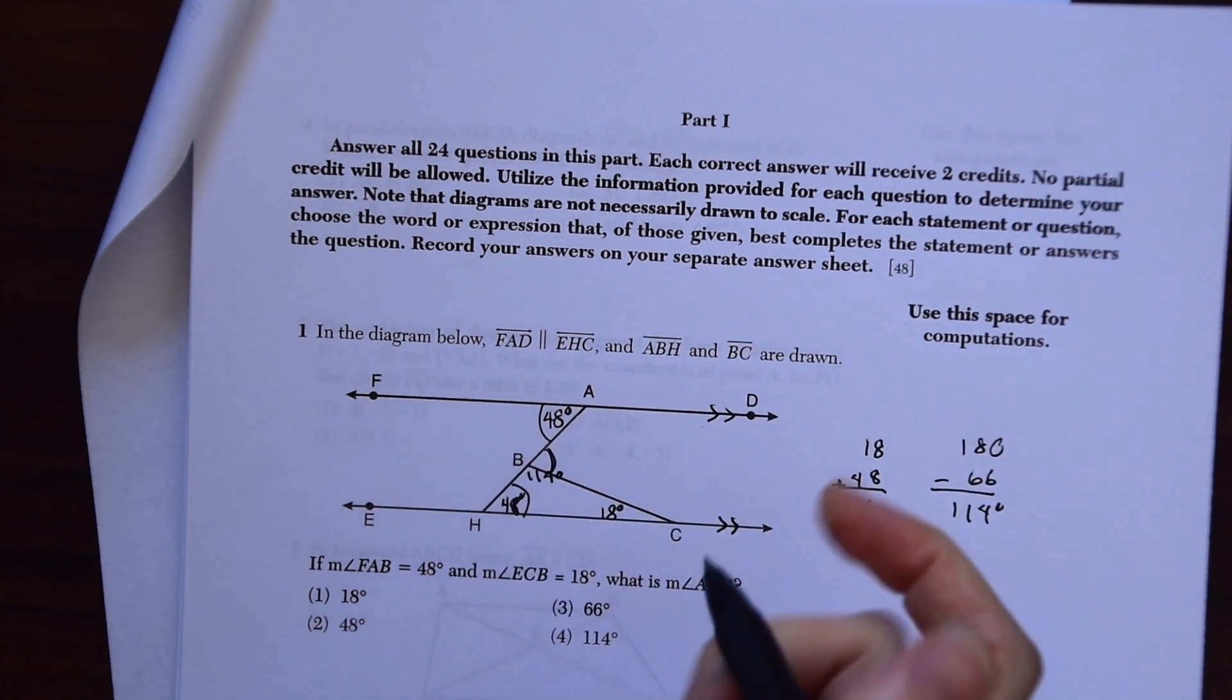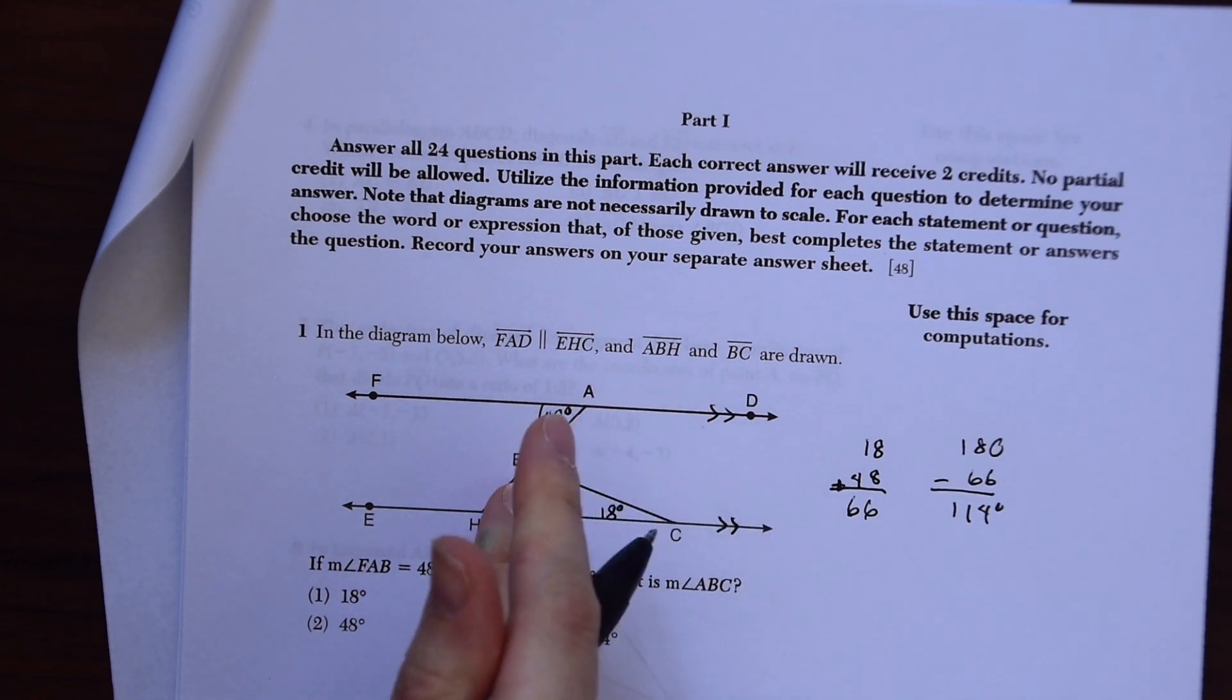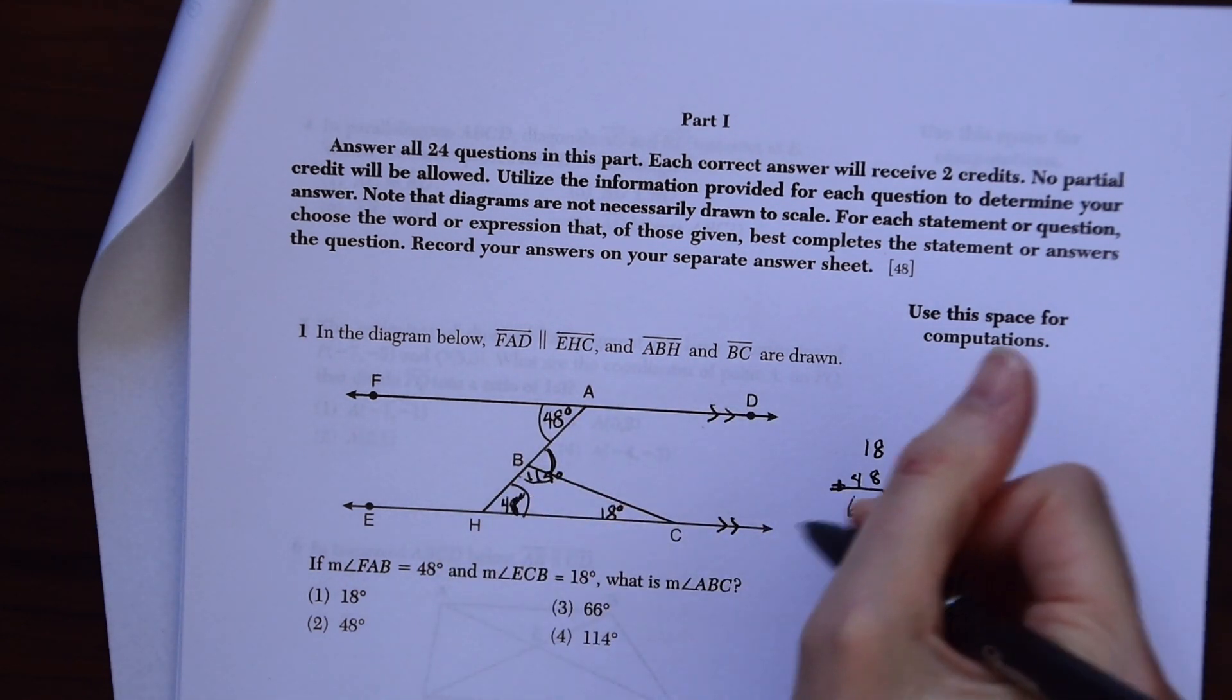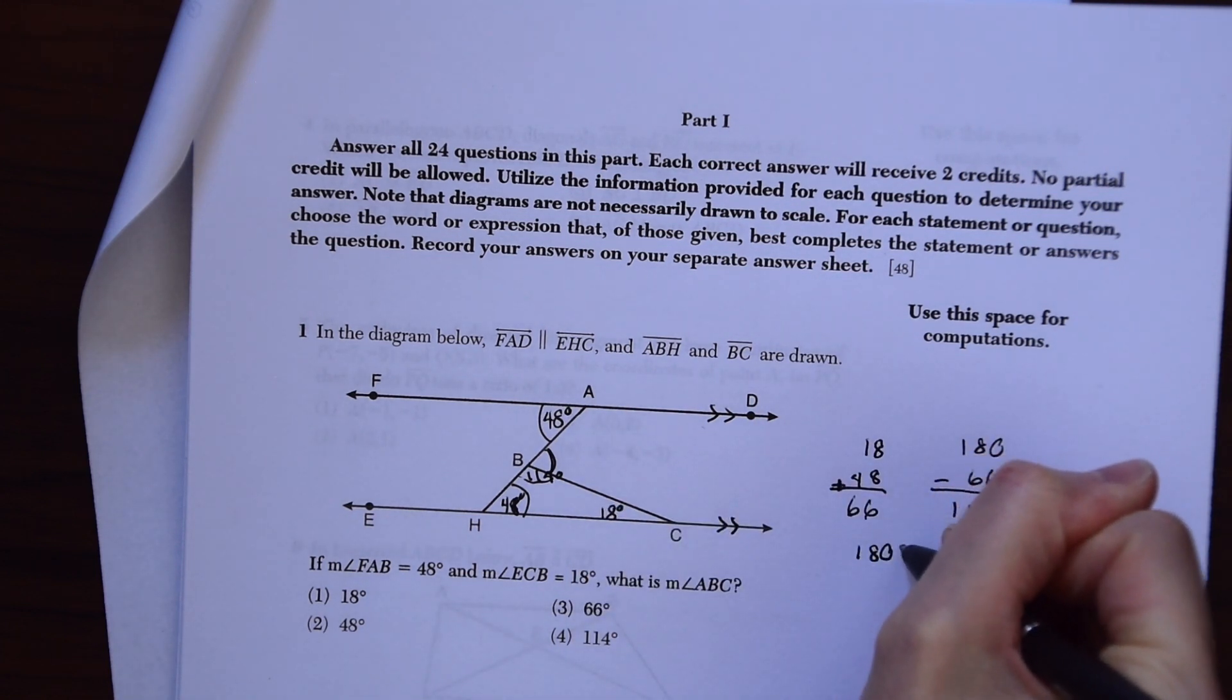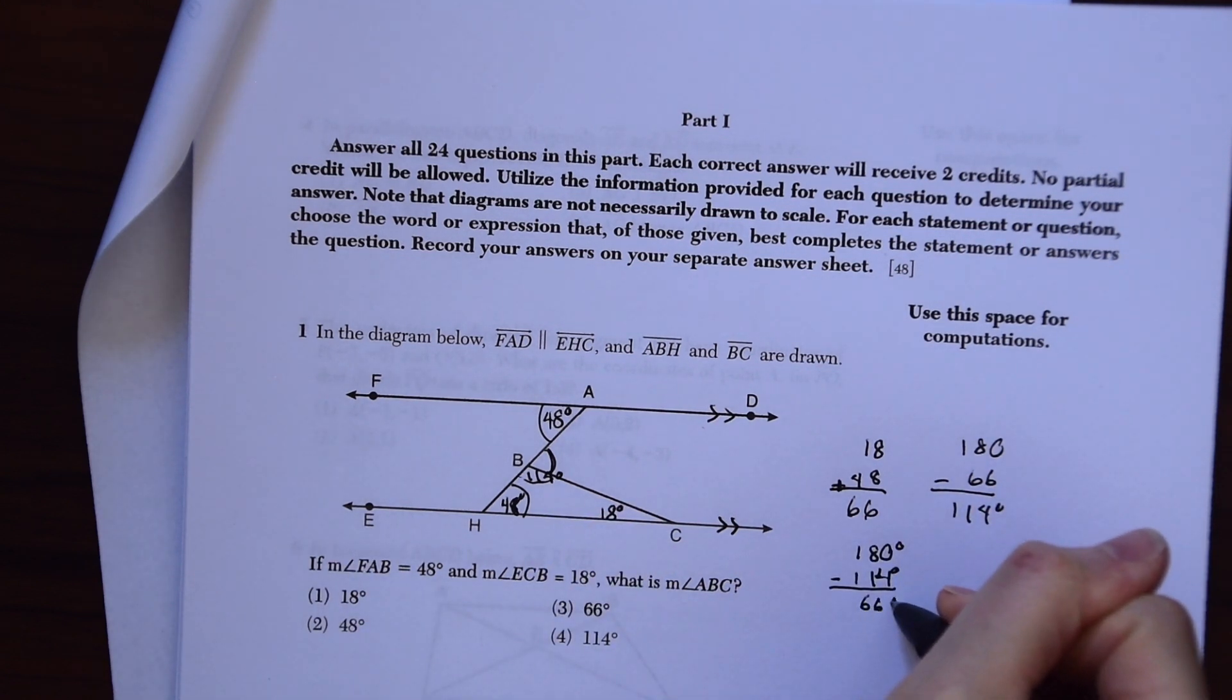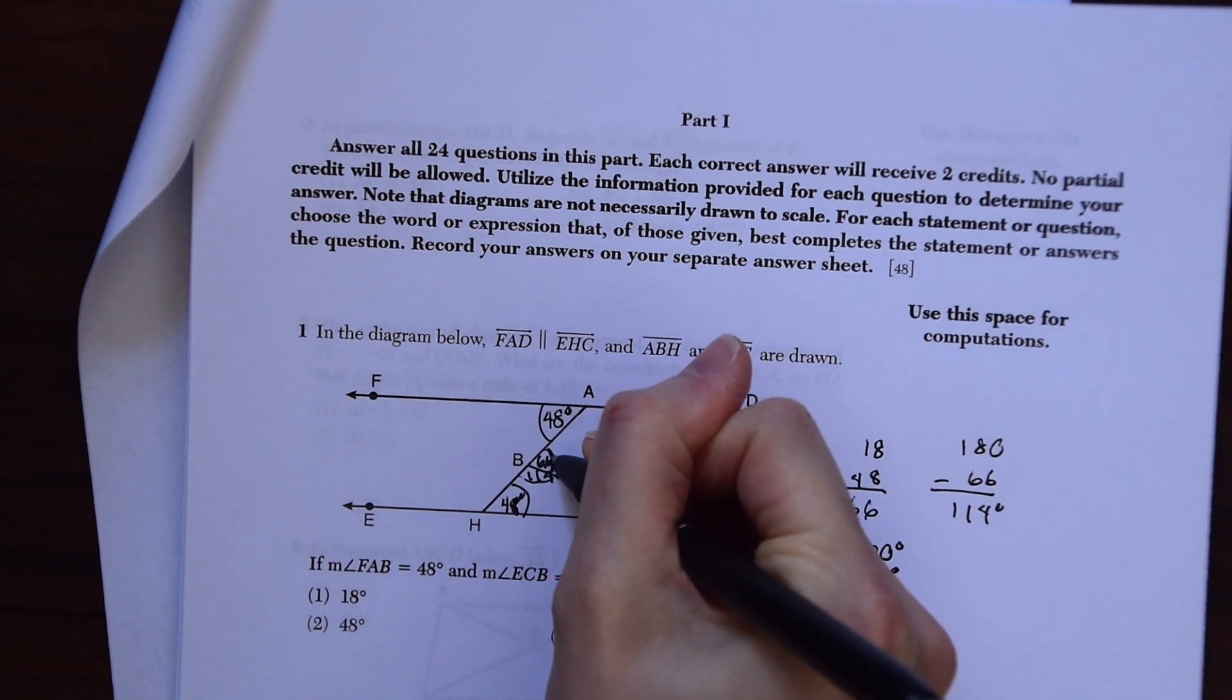And this is a straight line, so we know that this entire angle here is going to equal 180 as well. So we're just going to take 180 minus 114, and we get 66 degrees. And that's our answer.